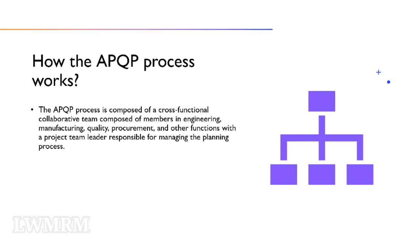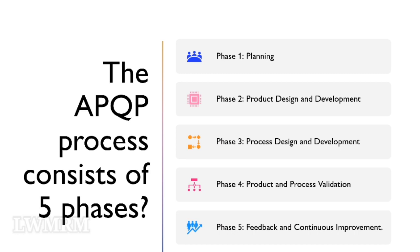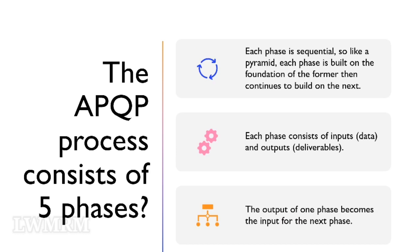The APQP process is composed of a cross-functional collaborative team composed of members in engineering, manufacturing, quality, procurement, and other functions, with a project team leader responsible for managing the planning process. The APQP process consists of five phases: Phase 1 — Planning; Phase 2 — Product Design and Development; Phase 3 — Process Design and Development; Phase 4 — Product and Process Validation; Phase 5 — Feedback and Continuous Improvement. Each phase is sequential, like a pyramid — each phase is built on the foundation of the former, then continues to build on the next. Each phase consists of inputs (data) and outputs (deliverables). The output of one phase becomes the input for the next phase.